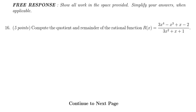In this video, we provide the solution to question number 16 from the practice final exam for MATH 1050. We have to compute the remainder and quotient of the rational function r(x) equals 3x to the 4th minus x cubed plus x minus 2, all over 3x squared plus x plus 1. As the denominator is a quadratic function, we can't use synthetic division, so we're going to have to use long division.